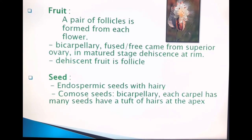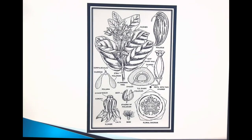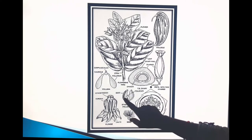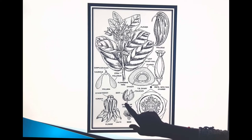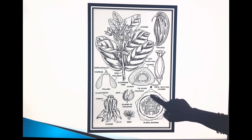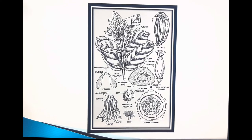What is meant by coma seeds? The definition: it is bicarpellary; each carpel has many seeds. Seeds have a tuft of hairs at the apex. See this diagram — this one is a single seed. This follicle, for example — a live picture is shown. This is the follicle fruit. From this fruit, at the rim, when the fruit dehisces, the seeds come out from the fruit. Each seed has a tuft of hairs at the apical region. Such type of seed is known as coma seeds.